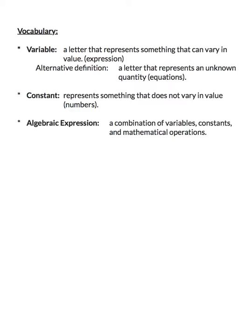A second definition that I use for variable is a letter that represents an unknown quantity. I use this definition when we talk about equations. When we talk about solving equations we're always going to be wanting to know what is x. The other thing that we have in algebra is constants. What does it mean to be constant? It means something that does not vary in value. These are going to be the numbers. Five is always equal to five, it can never equal anything else.